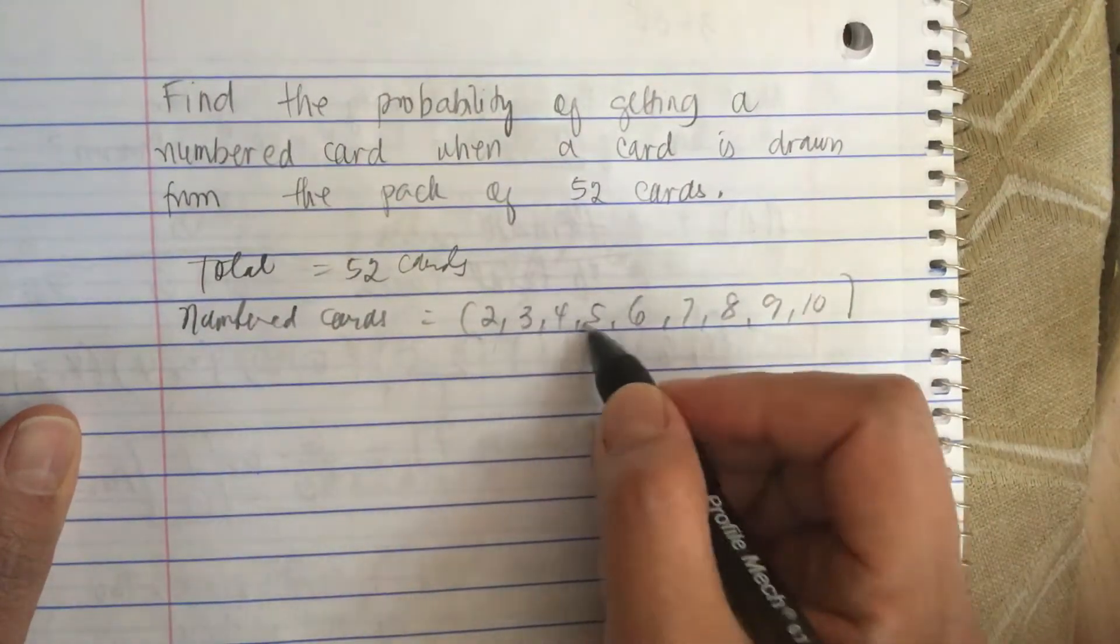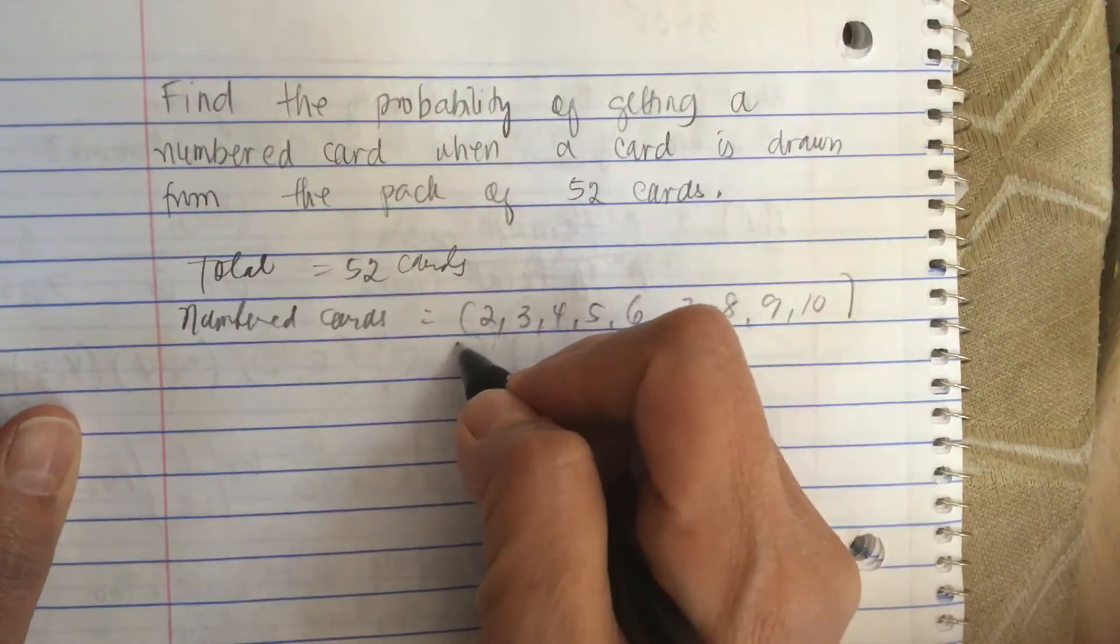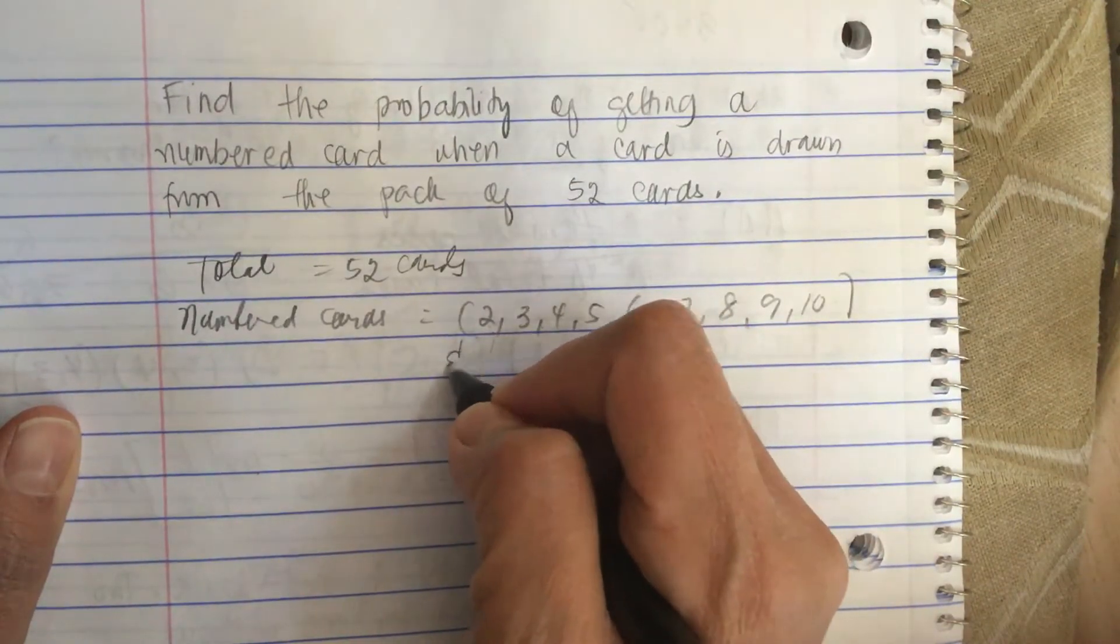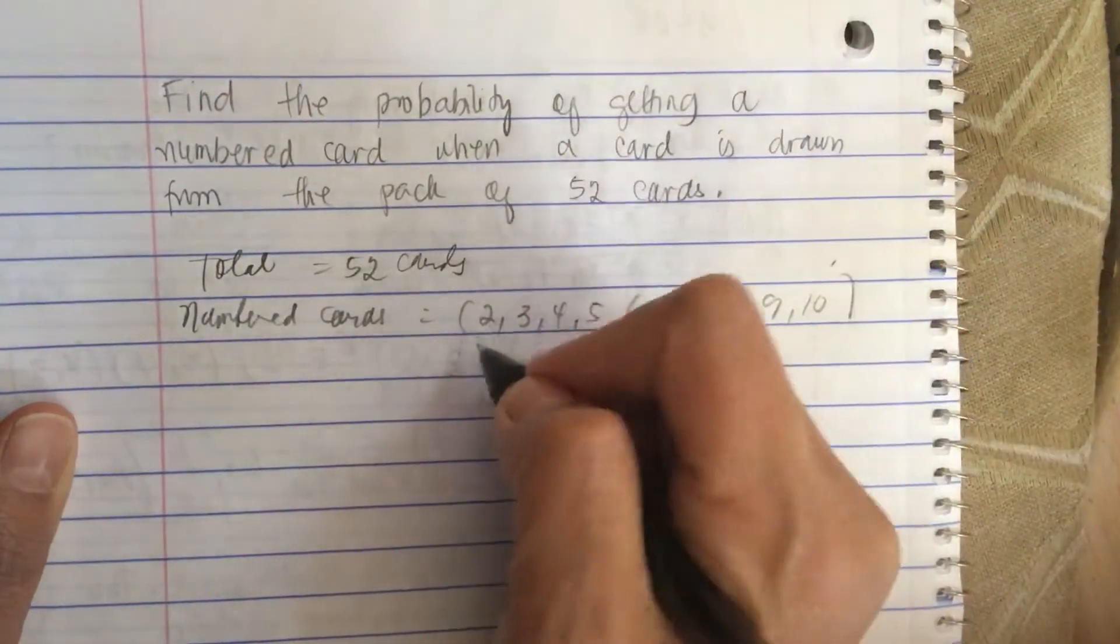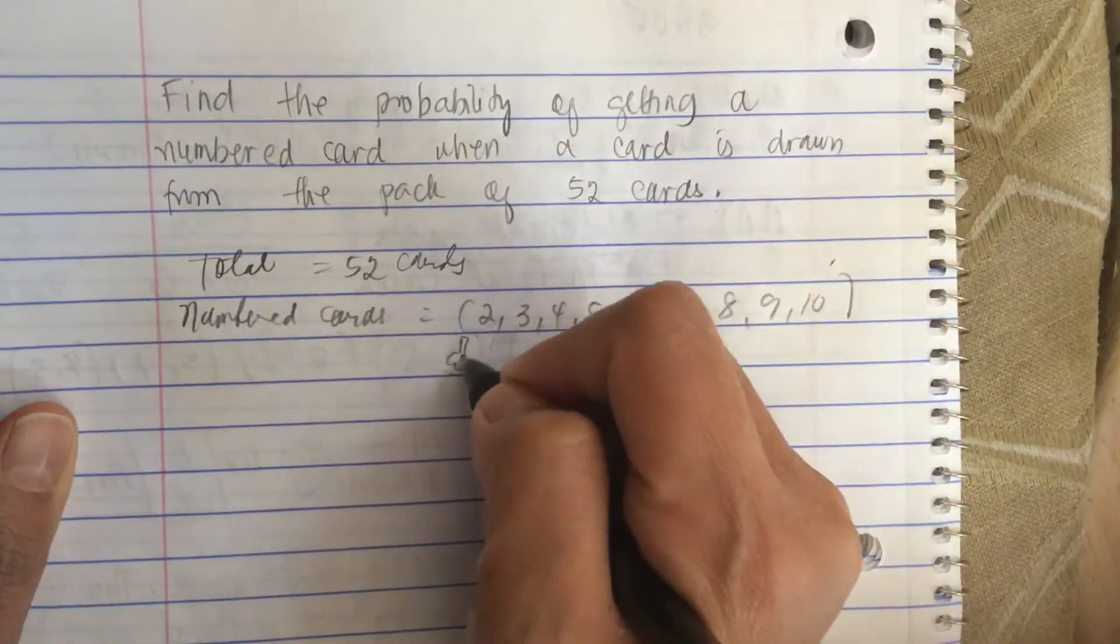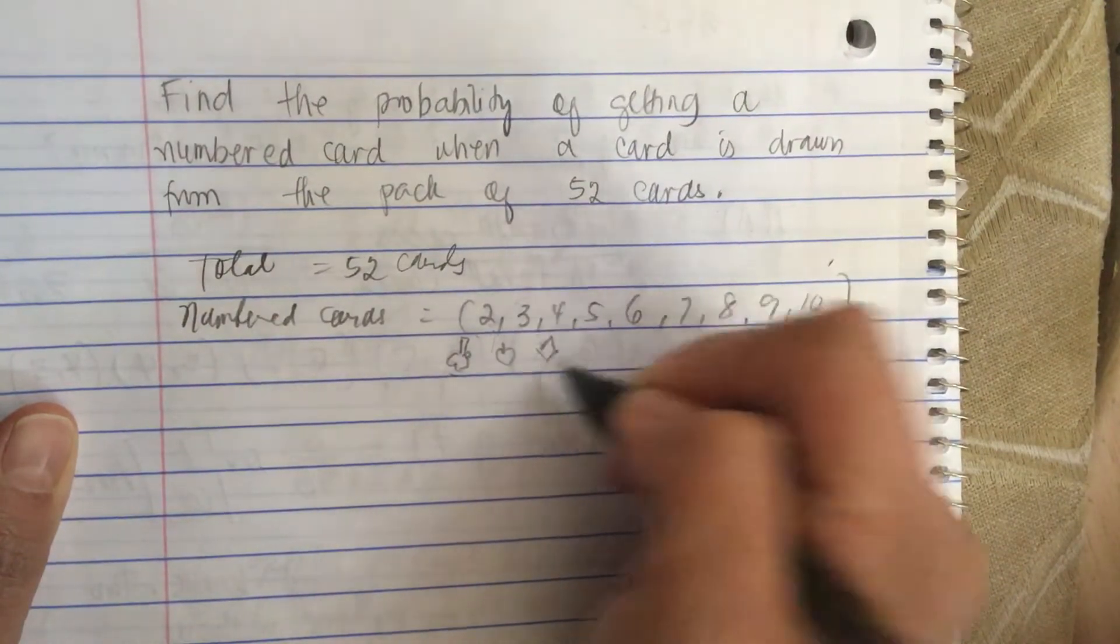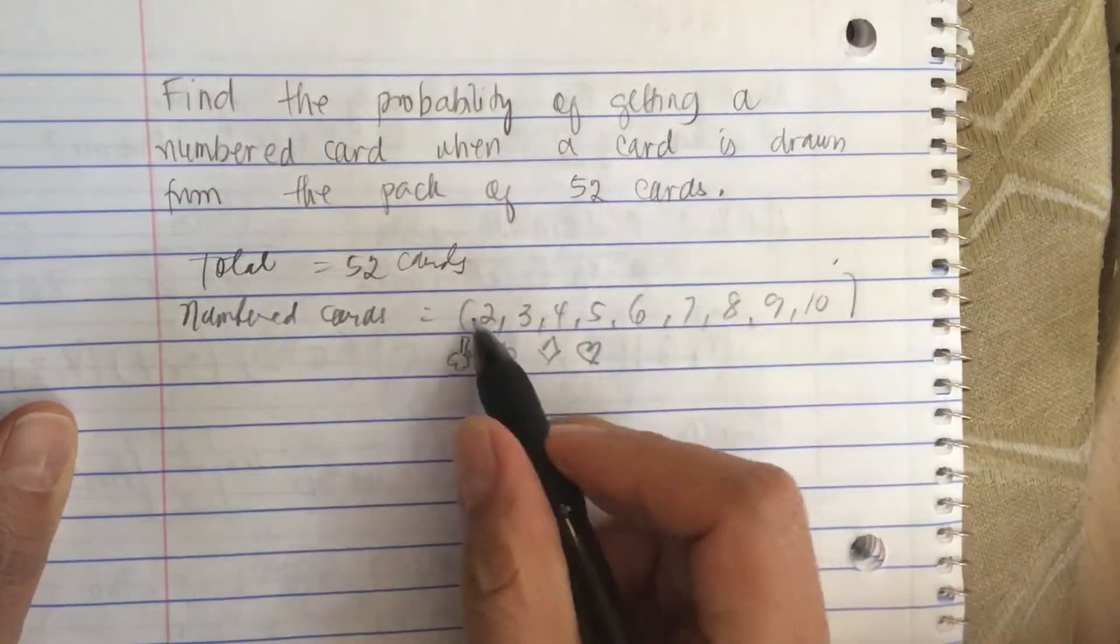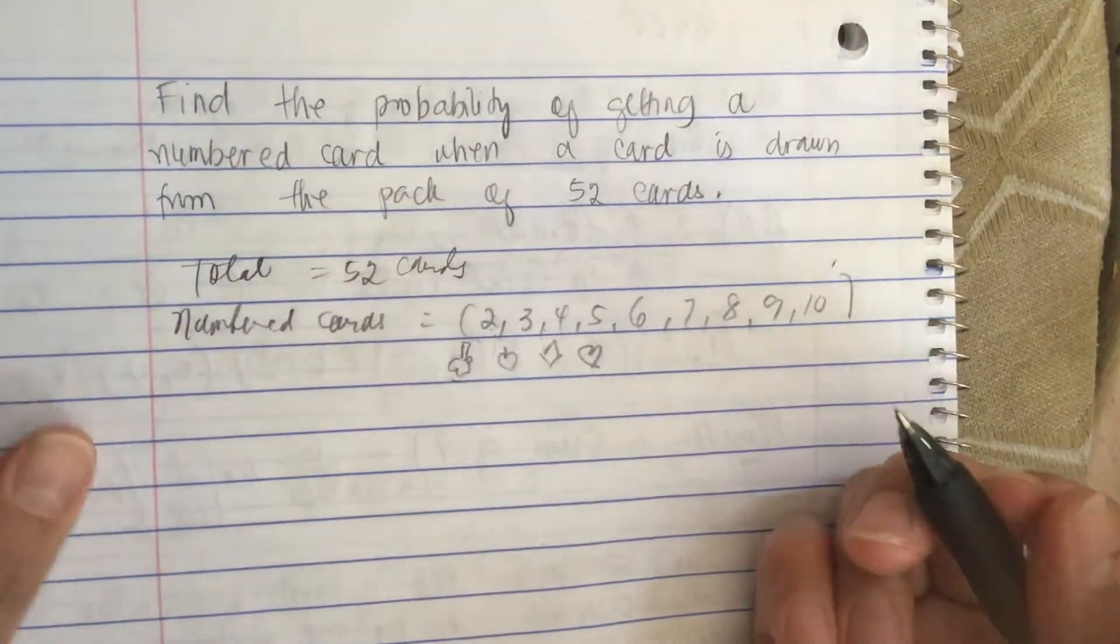So each of these has 4 cards. So we have the club and then the spade, diamond, and heart. So each number has club, spade, diamond, and heart.